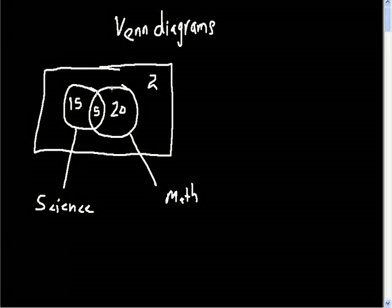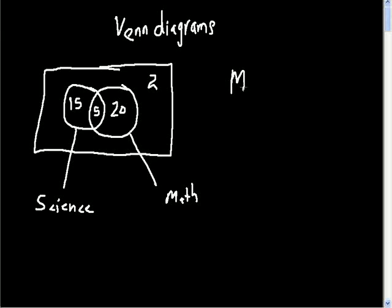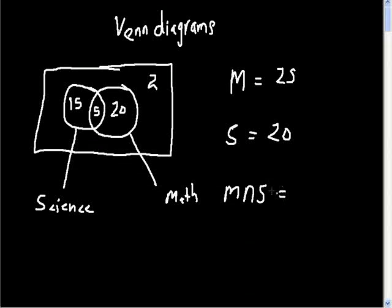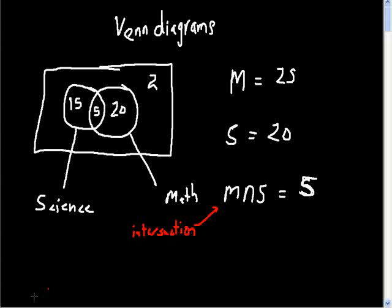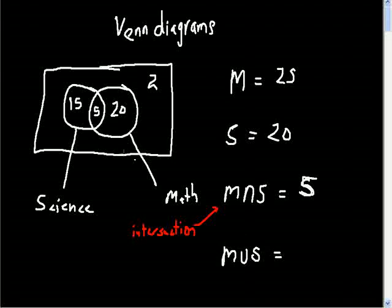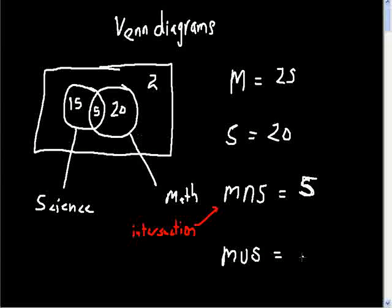Each circle has specific notation. M equals 25. S equals 20. M intersection S — that's a new symbol — equals 5; intersection looks for the common region. Don't confuse it with S. Then you have M union S, which covers those who do science, those who do maths, and those who do both — that's 40. Union uses this symbol.